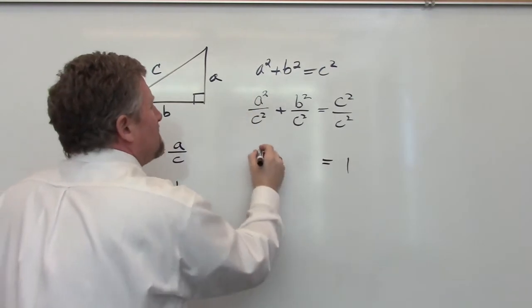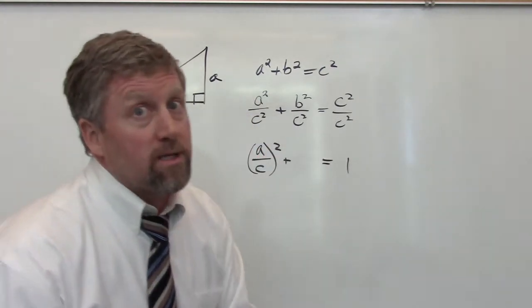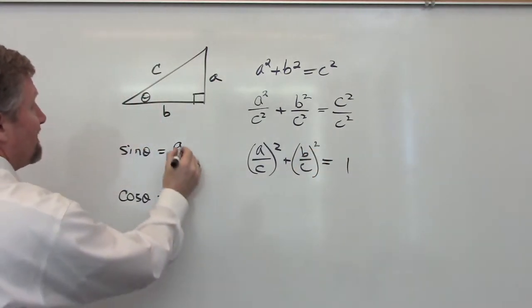A squared over C squared can be written as A over C squared, and B squared over C squared can be written as B over C squared. Now I'm sure you see where I'm going with this.